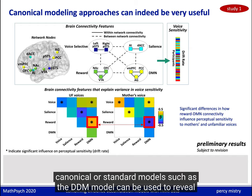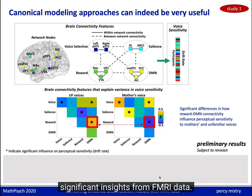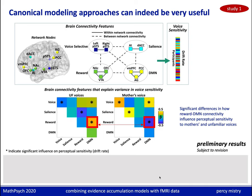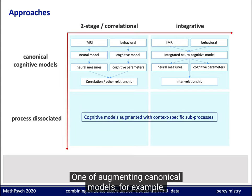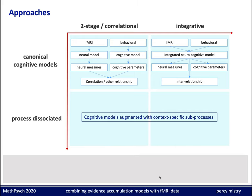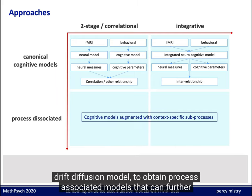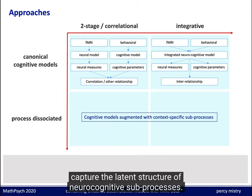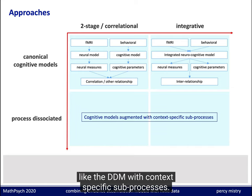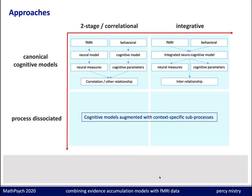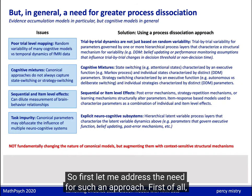Canonical or standard models such as the DDM can be used to reveal significant insights from fMRI data. But my primary agenda today is to examine a different dimension: augmenting canonical models, for example the drift diffusion model, to obtain process-dissociated models that can further capture the latent structure of neurocognitive subprocesses. These models augment canonical models like the DDM with context-specific subprocesses. Let me address the need for such an approach.